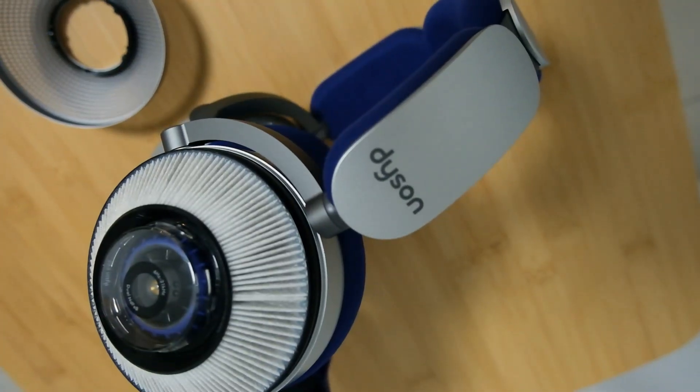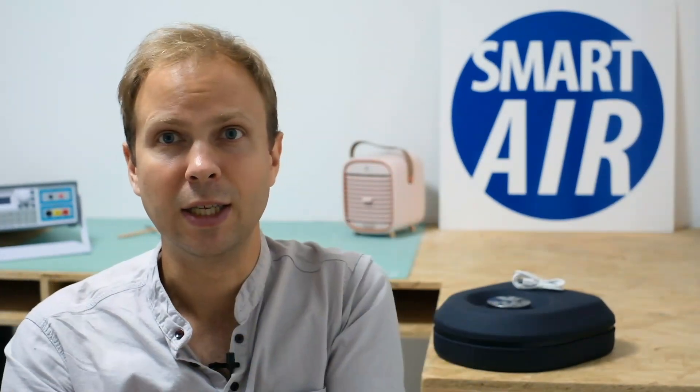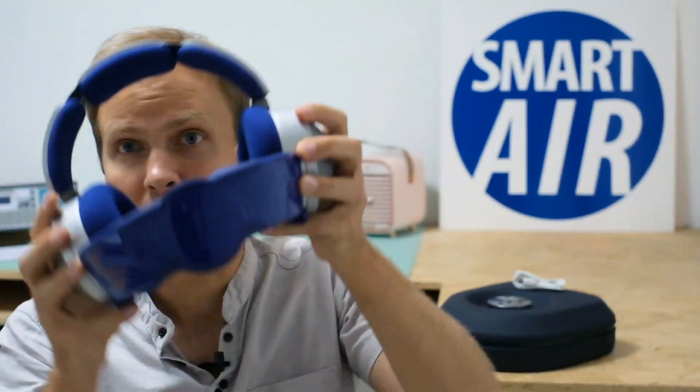So two HEPA filters, the air goes in here and then it gets filtered by the filter and it comes out into this mask section. So this mask section isn't actually filtering out into the air, this is just blowing the air into the region around our face, around our nose, around our mouth so that we can breathe clean air.